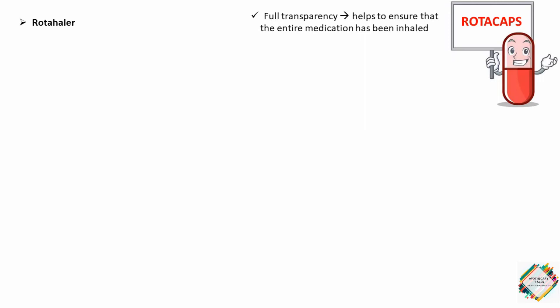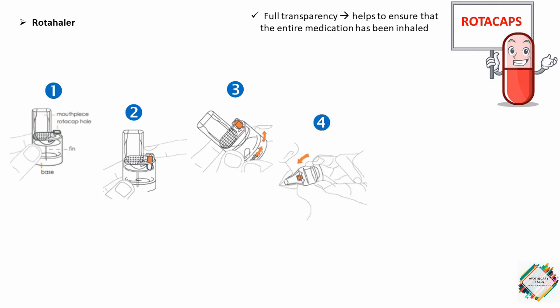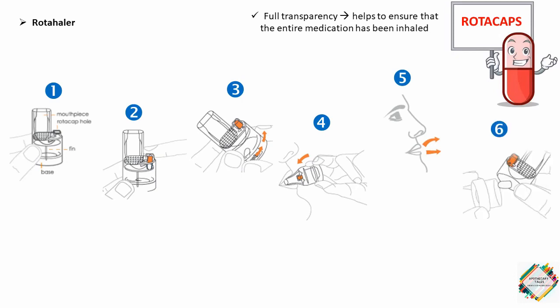To use the Rotahaler: hold it vertically and position the two halves so the fin is not directly below the Rotacap hole. Remove a Rotacap from its bottle and insert it into the Rotacap hole with the transparent end facing down. Hold the mouthpiece firmly with one hand and rotate the base. Breathe out completely and place the mouthpiece between your teeth, close lips tightly, tilt your head slightly backward, and breathe in through the mouth rapidly and deeply. Hold your breath for about 10 seconds or as long as comfortable, then breathe out normally. If powder remains, repeat steps 4 and 5, then open the Rotahaler and dispose of the empty capsule.